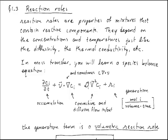A reaction rate is a property of a mixture that contains reactive components. The reaction rate depends on the concentrations and temperatures of those species, just like the diffusivity and the thermal conductivity. We cannot just automatically equate reaction rates to derivatives of concentration with respect to time, because it is certainly possible — and in fact common in practice — to see reactors run at steady state conditions where nothing is changing with respect to time, and yet a reaction is still occurring.